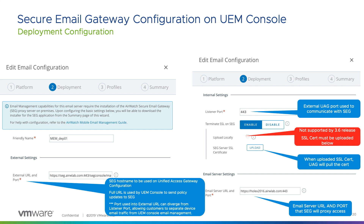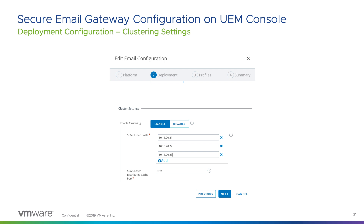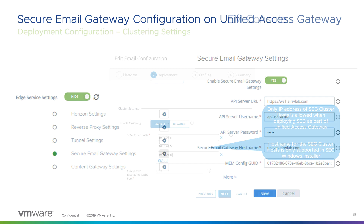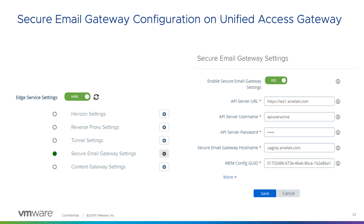The next deployment step — if you're deploying multiple Secure Email Gateways in high availability — is to enable clustering. When enabling clustering, you must provide the IP address for all Secure Email Gateway instances in the cluster. Do not use host names for Unified Access Gateway deployments of Secure Email Gateway; you must provide the IP address for all SEG hosts. That completes the configuration on the UEM console.